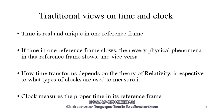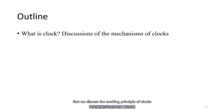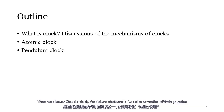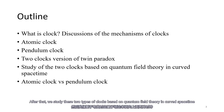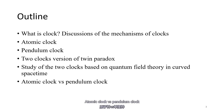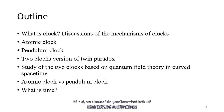A clock measures the proper time in its reference frame. Here is the outline. First, we discuss the working principle of clocks. Then we discuss the atomic clock, pendulum clock, and a two-clock version of the twin paradox. After that, we study the two types of clocks based on quantum field theory and curved spacetime. Then we study atomic clock versus pendulum clock. At last, we discuss the question: what is time?